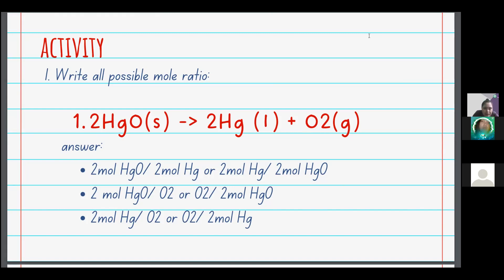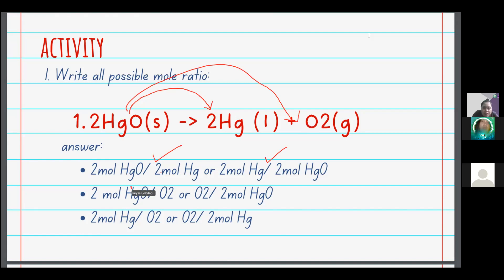For the first reaction, you can partner mercury oxide to mercury: 2 is to 2. The reciprocal is also counted, so 2 moles of mercury is to 2 moles of mercury oxide. Then we have 2 moles of mercury oxide — this should be written as 2 moles of mercury oxide is to 1 mole of oxygen.